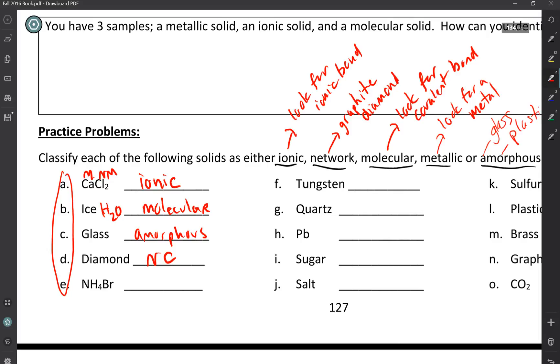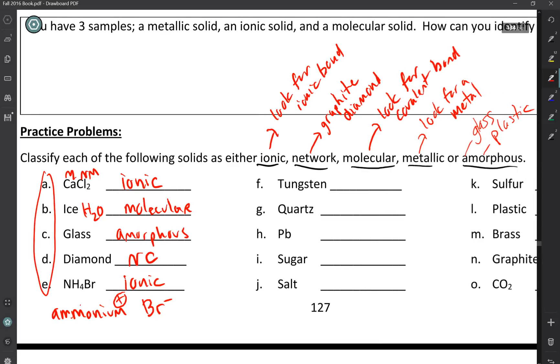NH4Br. This is ammonium bromide. This is one that people usually get tricked by. It looks like we have all non-metals with nitrogen, hydrogen, and bromine. But if you think about this, NH4 is the ammonium ion. And then we have the bromine ion Br minus. So even though these are all non-metals, this is an ionic compound because we have two different ions. So therefore, if there's an ionic bond present, we're talking about an ionic solid.